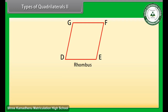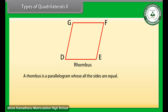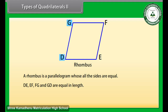Next is rhombus. A rhombus is a parallelogram whose all sides are equal. Here DE, EF, FG, and GD are equal in length. So DEFG is a rhombus.